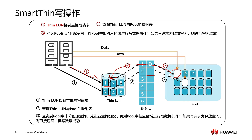At this time, it will first allocate space through just-in-time technology — allocated on demand. First, space is allocated for it, then a mapping relationship is formed through just-in-time allocation. Then data is written into this space. That is our write operation of SmartThin.